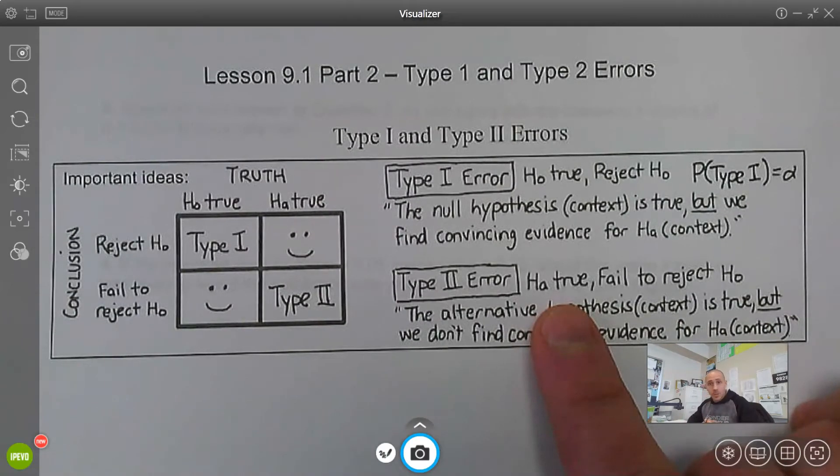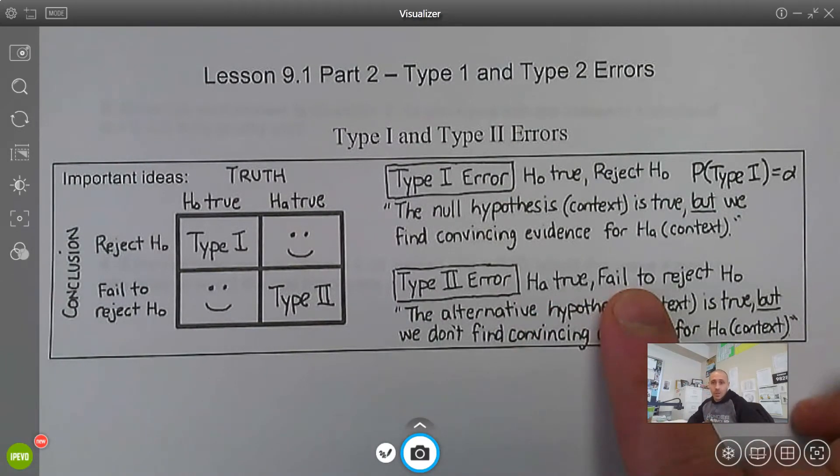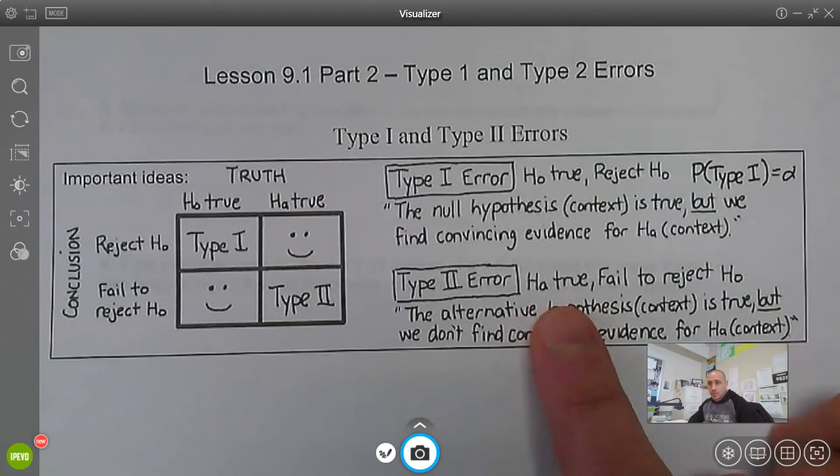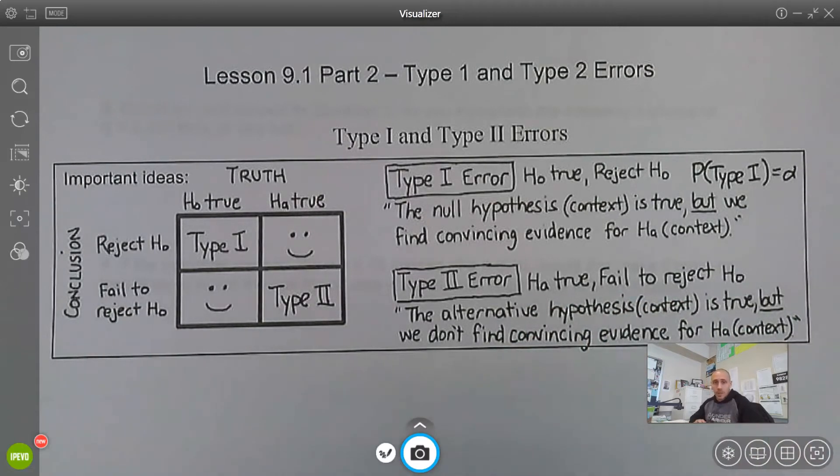Type 2 error, the alternative is true, but we fail to reject the null. So the alternative is true, but we don't find convincing evidence for the alternative.